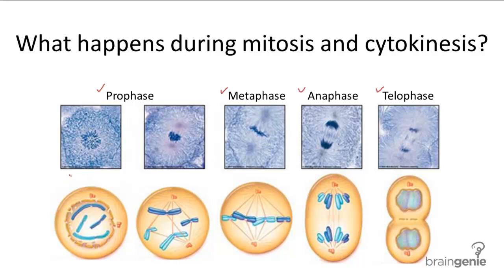Prophase is the longest phase of mitosis, so it's usually divided into early and late prophase. In early prophase, the genetic information is condensed into chromosomes, and this is also when spindle fibers begin to appear from the centrioles in the cytoplasm.